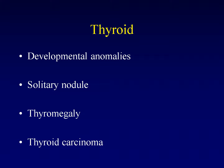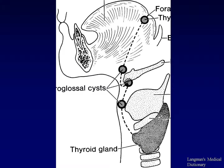In order to understand developmental anomalies in particular, it's useful to review the embryology of the thyroid gland. The thyroid gland begins fetal life at the foramen cecum at the base of the tongue. From there, during fetal life, it migrates down the front of the neck to its normal, familiar adult position at the base of the neck. As it does so, it leaves a trail behind it — an epithelial tract called the thyroglossal duct.